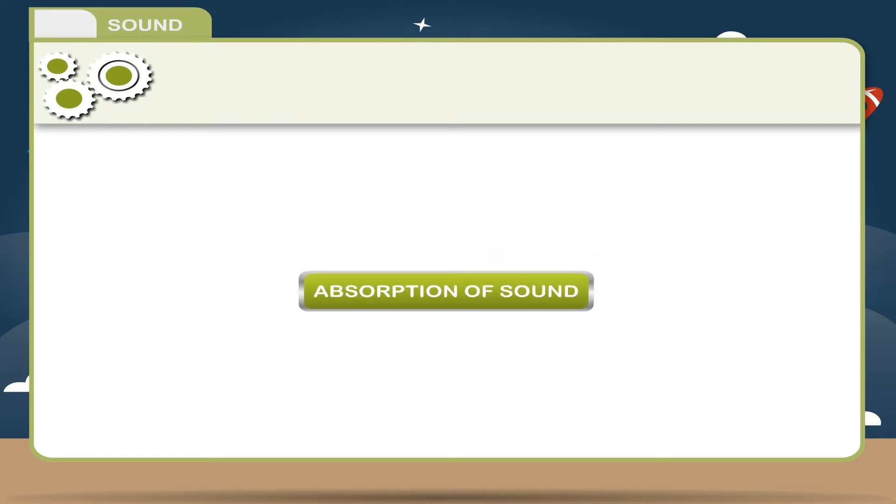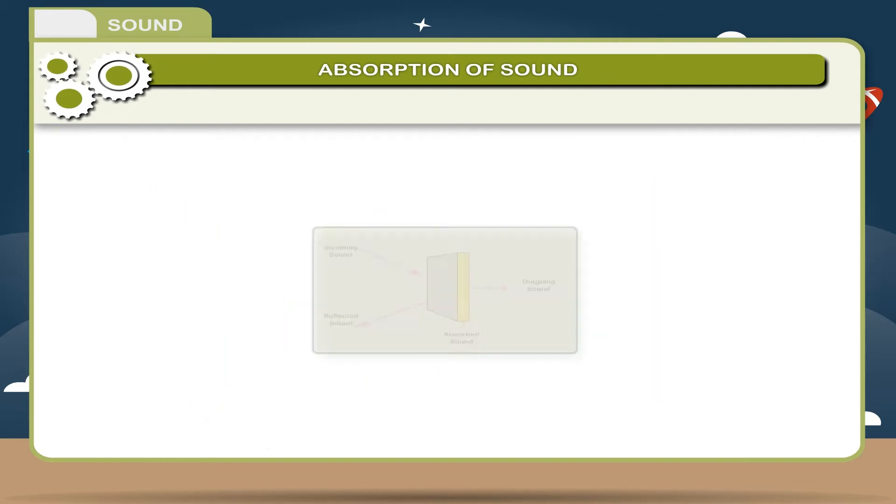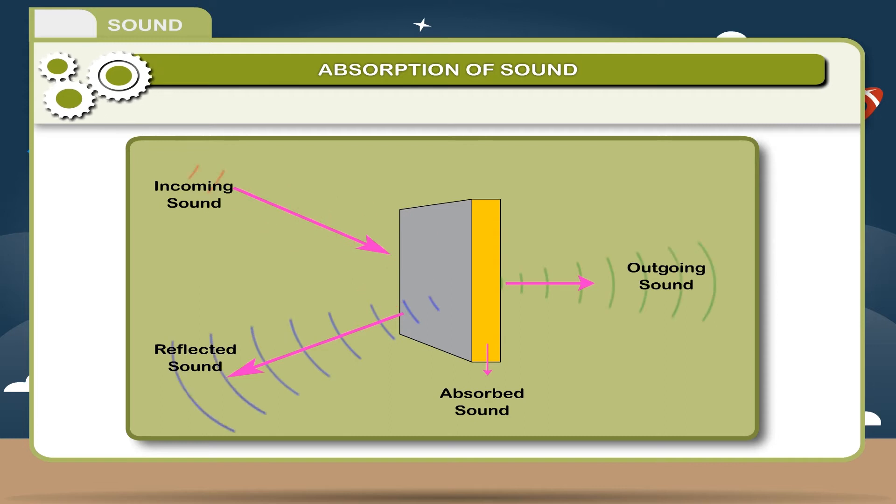Absorption of Sound. The absence of an echo means the sound waves are absorbed and not reflected back. The controlling of echoes in a building is called acoustics. When a sound wave strikes one of the surfaces of a room, some of the sound energy is reflected back into the room and some penetrates the surface.